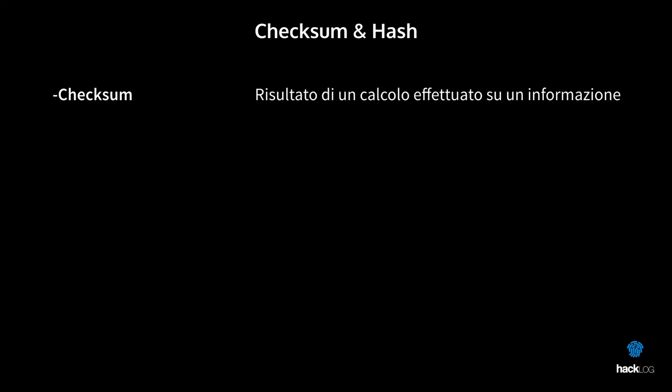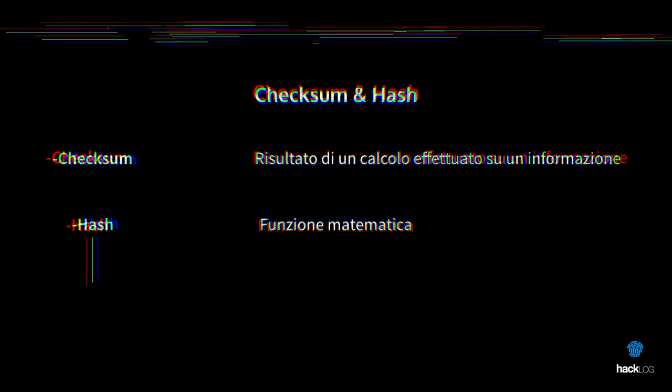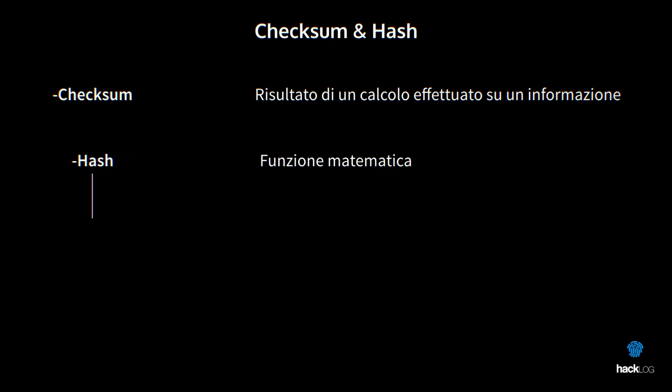When in informatics we talk about a checksum, we refer to that sequence of bits that is the result of a calculation made on the content of an information. This calculation is generated by a hash, a mathematical function able to produce an alphanumeric value — precisely the checksum — in a non-invertible way. Said more simply, by giving a hash to any information, it produces the checksum, i.e., the result. This allows anyone to generate a checksum starting from information, but not the reverse.